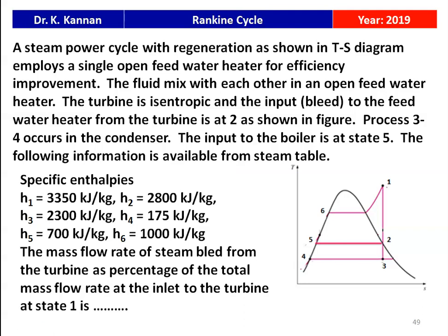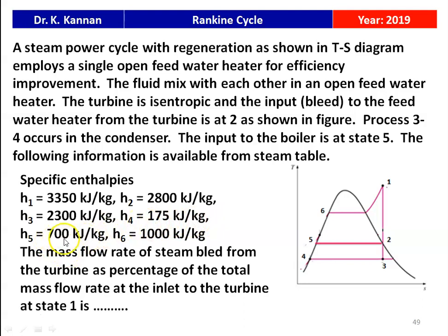The first question is from the 2019 question paper. A steam power cycle with regeneration, as shown in the T-S diagram, employs a single open feed water heater for efficiency improvement. The fluid mixes in the open feed water heater. The turbine is isentropic and the bleed to the feed water heater is from the turbine at point 2 as shown in the figure. Process 3-4 occurs in the condenser, and the input to the boiler is at state 5. The specific enthalpies from the steam table are: H1 = 3350 kJ/kg, H2 = 2800 kJ/kg, H3 = 2300 kJ/kg, H4 = 175 kJ/kg, H5 = 700 kJ/kg, and H6 = 1000 kJ/kg.